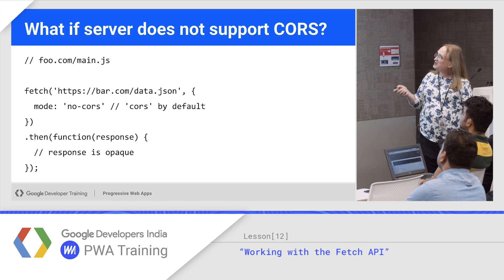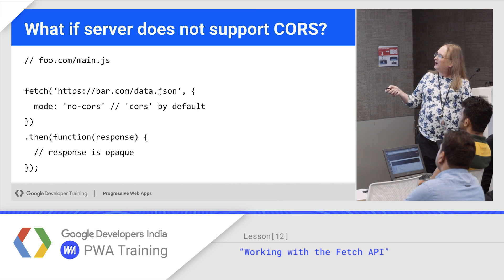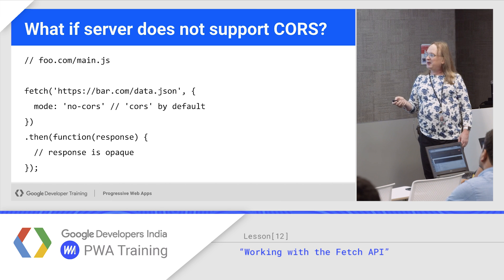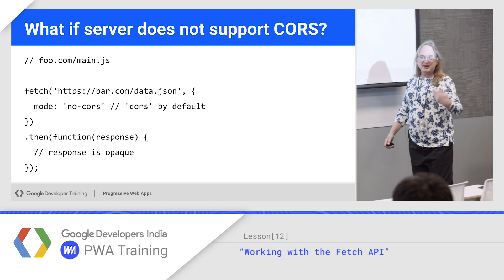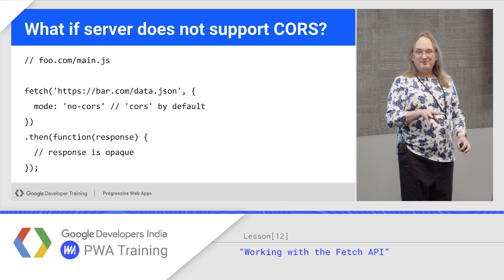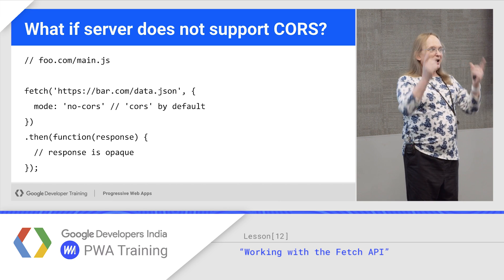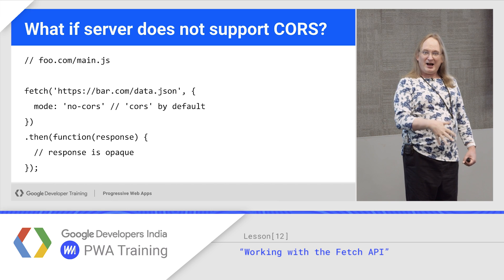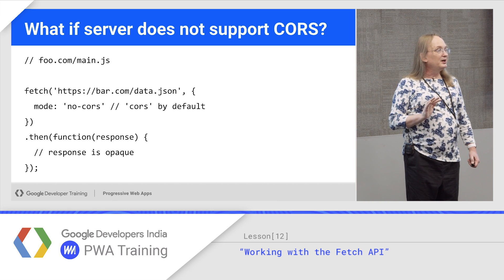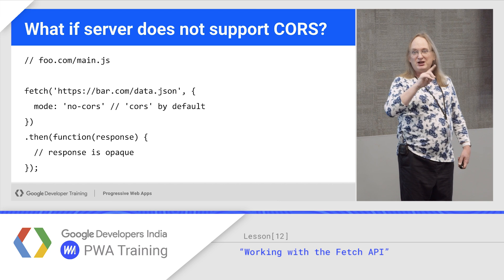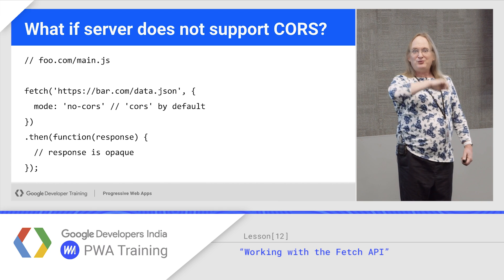So if there's no CORS — if I ran fetch with a mode of no-cors and asked for data.json — I still get a response, and response.ok is true. But the response is opaque, meaning when I go to read the data, I get an exception. For example, if you have a page with an iframe from a different origin, your outside application might make that cross-origin request, get the opaque data, and pass it to the iframe. The iframe, being of the correct origin, could decode it. Some third-party libraries throw things in an iframe so they can decode that information. It keeps the data safe in transit.